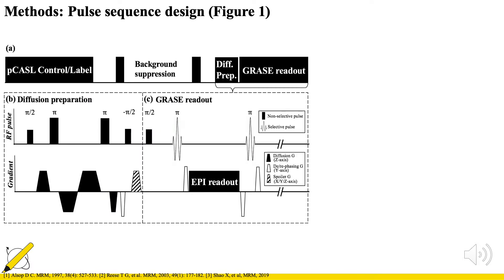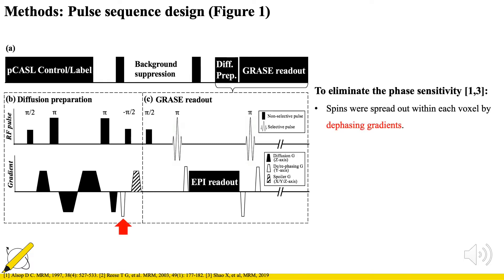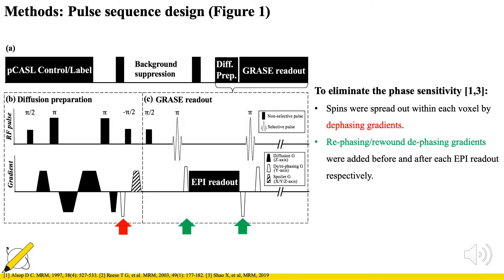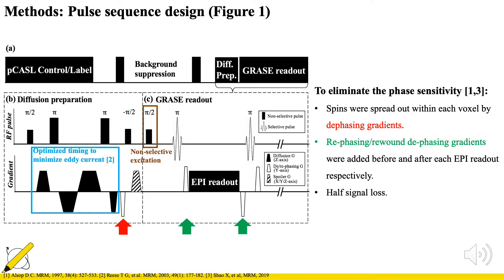This is a diagram of the POT sequence, which consists of Picasso labeling, diffusion preparation, and a GRASE readout. The idea is to use diffusion weighting to separate the intravascular and extravascular components of the labeled ASL signal. Combining diffusion encoding and TSE-based acquisition usually violates the CPMG condition, so we used a non-CPMG approach by adding additional diffusion gradient pairs. This sequence was also optimized for eddy current and slice profile.